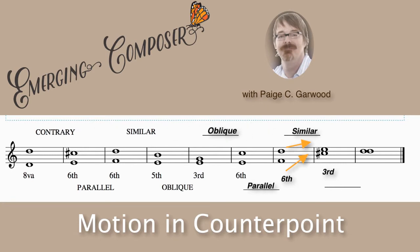Now let's take a look at the very last measure. We have two notes on the same line — that's a unison, two Ds. Looking at the motion between that measure and the one preceding it: we had C sharp and E, and then both voices move to D. The top voice moved down to D, the bottom voice moved up to D — two voices moving in opposite directions. That's contrary motion.